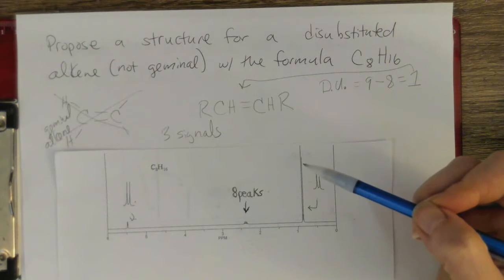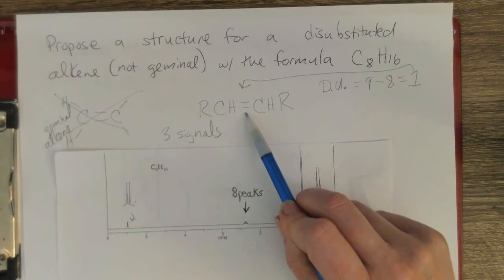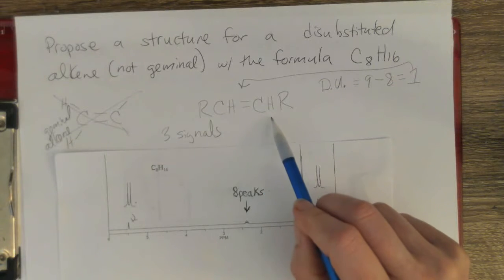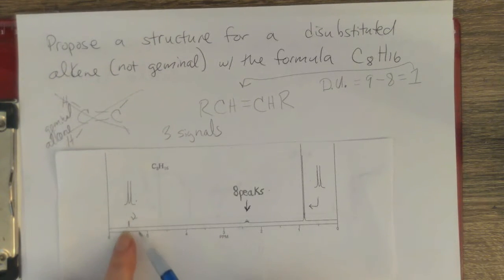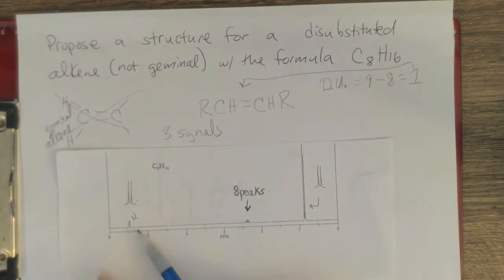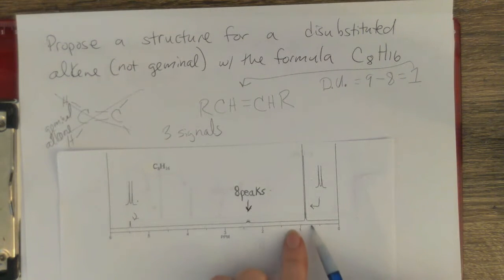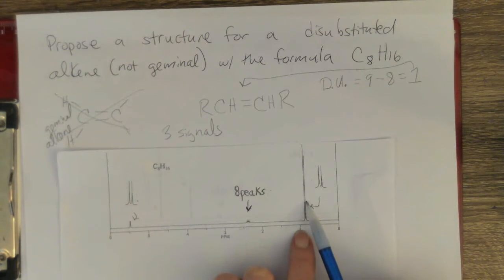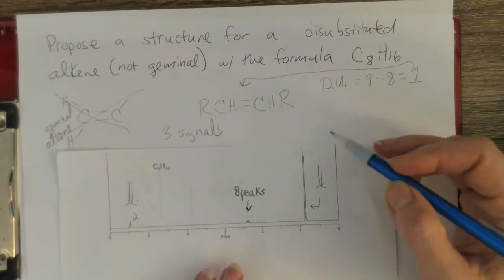Next let's look at the chemical shifts. We know we have an alkene, and alkene protons are shifted further downfield than protons attached to sp3 hybridized carbons. So way down here I expect to see the alkene protons. And around one ppm — the farthest upfield — is where we see methyl groups, so I'm expecting that signal to be from methyl groups.